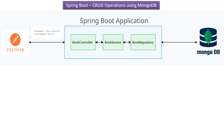In this video tutorial I will explain CRUD operations using Spring Boot and MongoDB. Here you can see the Spring Boot application. It has a BookController. BookController talks to BookService, BookService talks to BookRepository, and BookRepository communicates to the MongoDB database.